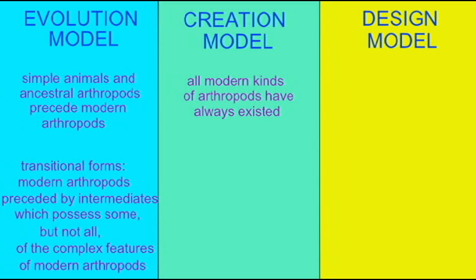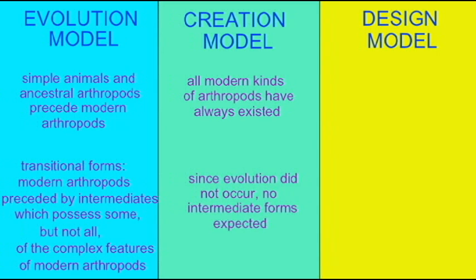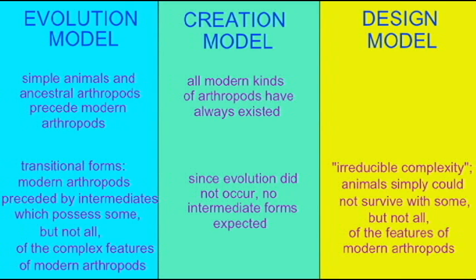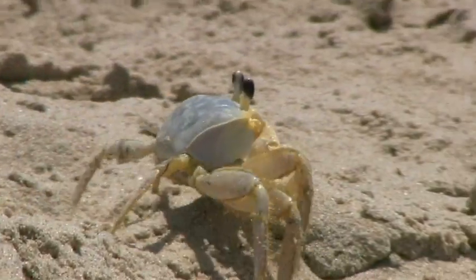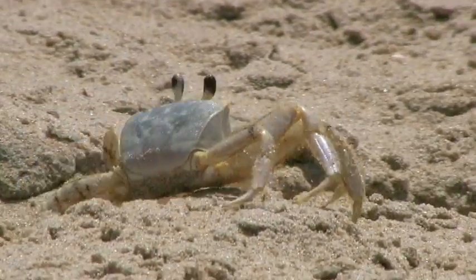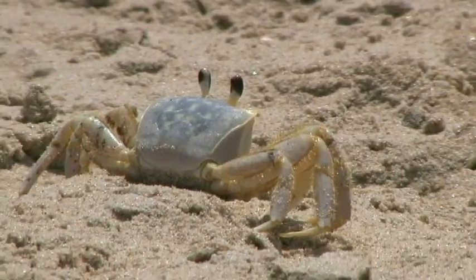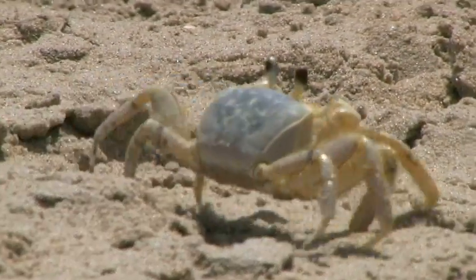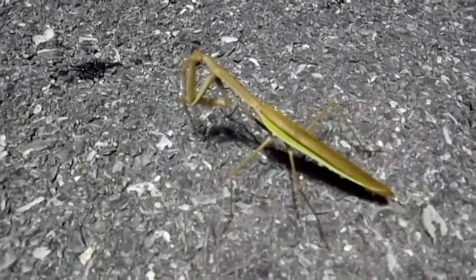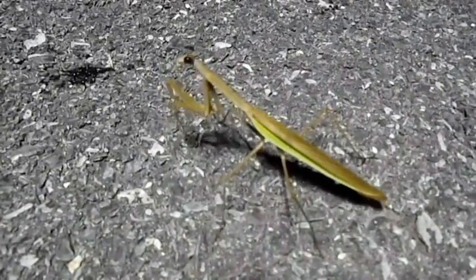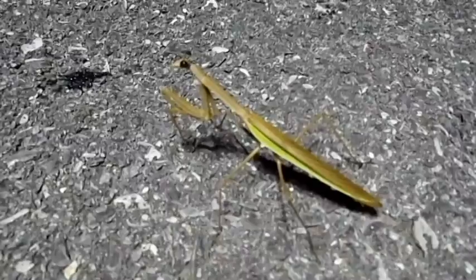There would be no advantage to having some features of arthropod limbs, but not all. Since there would be no advantage to having some features of these complex traits—since some features alone would not work—these animals would never evolve and would never survive. So in the design model, it is simply impossible for complex traits, such as the complex body plan of arthropods, to develop over a series of transitional stages. This model can then be tested.